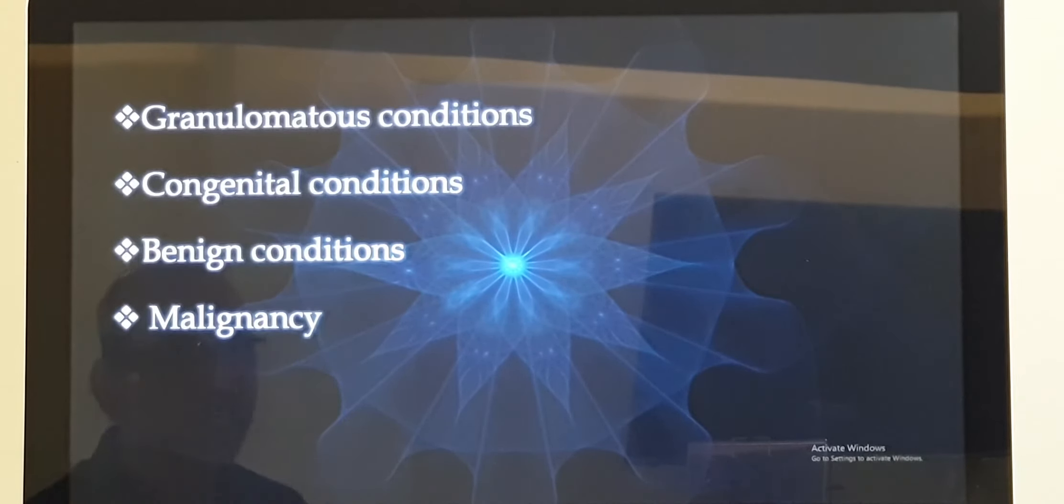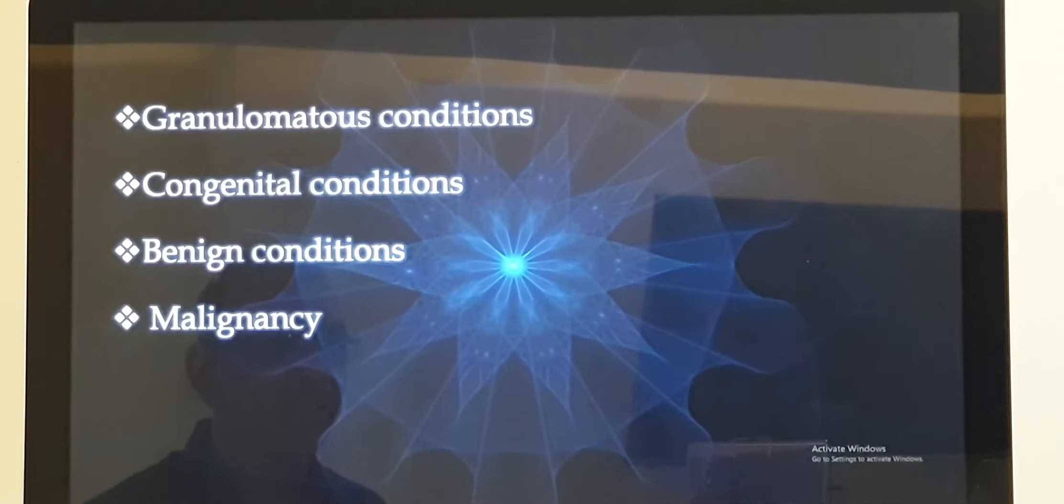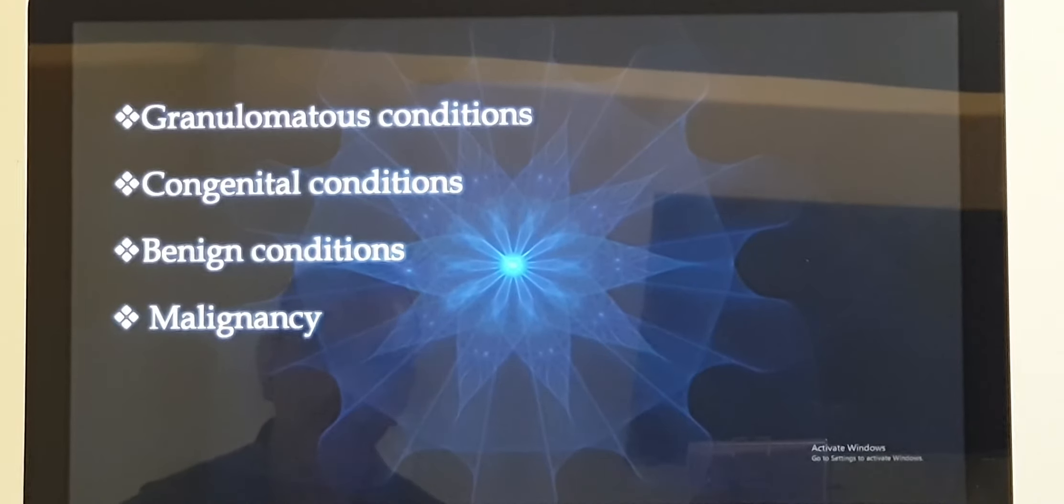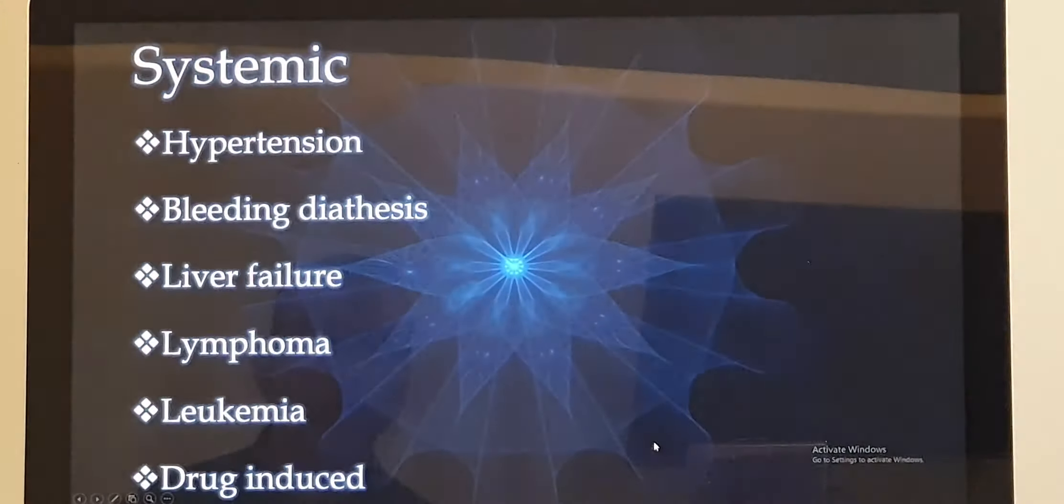Now you have few congenital causes too like hemangioma in the nose. Now benign conditions, benign means if you ask me whether it is malignant, no. It may turn malignant, that is what the term benign means. Like papilloma, any sort of papilloma like inverted papilloma, fungiform papilloma, hemangiopericytoma and you have so many benign conditions. Now finally the malignancy, of course the malignant condition will definitely bleed. These are the local causes.